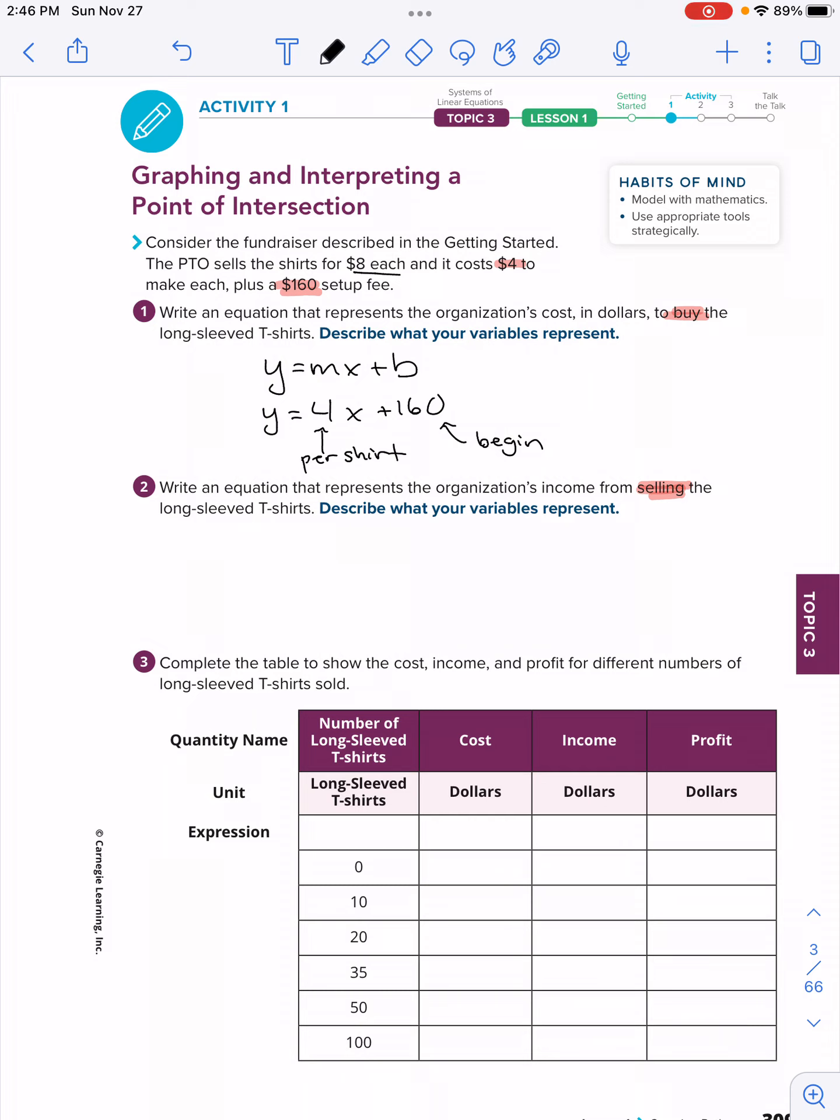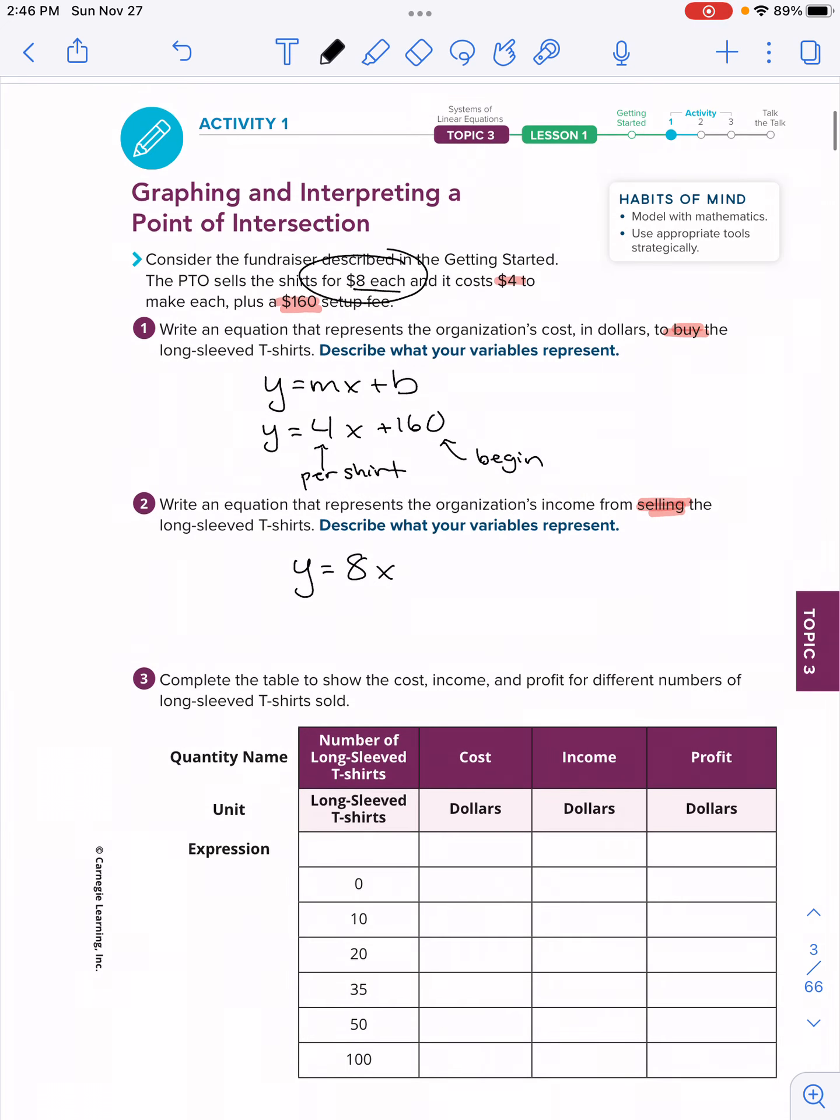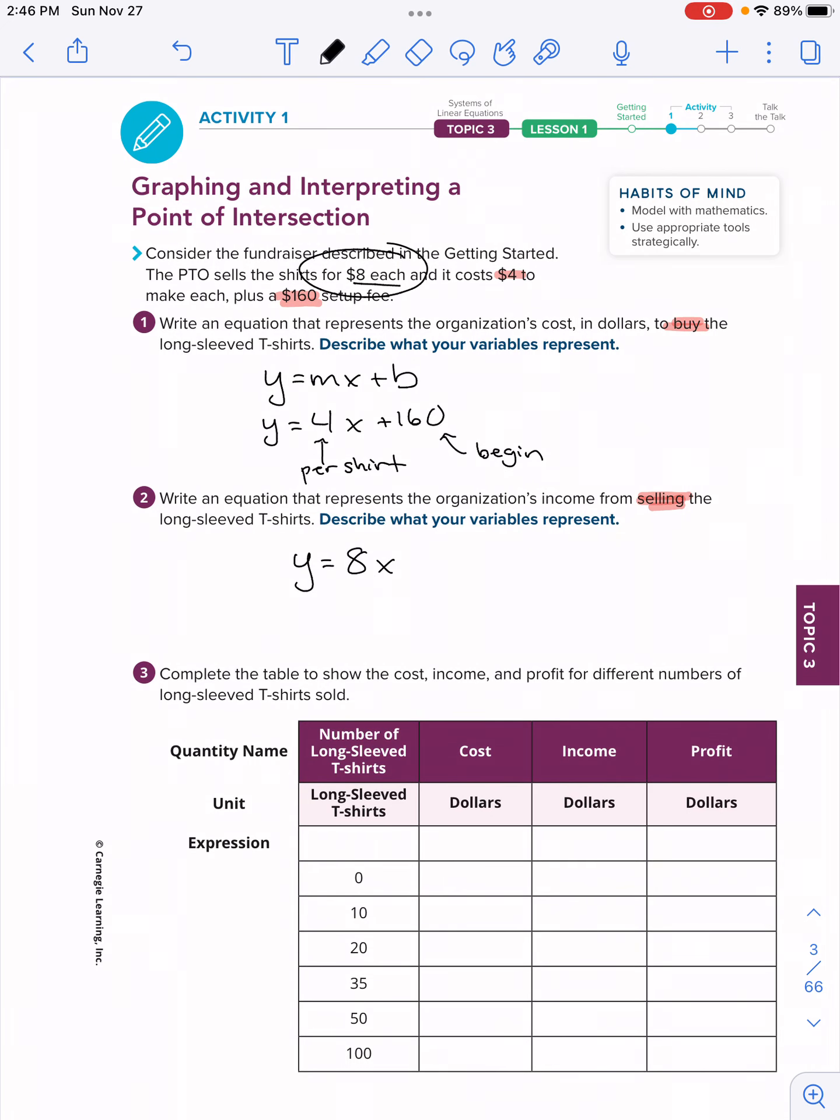Number two: write an equation that represents the organization's income. We're trying to raise some funds, this is a fundraiser. So we're selling it for $8 a shirt. There's no initial value, there's nothing where we begin with in terms of selling. So this is just y equals 8x. If we sell one shirt, 8 times 1 is 8. If I sell two shirts, 8 times 2 is 16. So we're just multiplying whatever x is by 8 for a number of shirts.